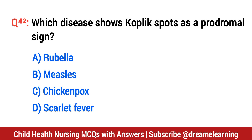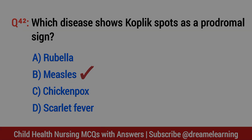Question number 42. Which disease shows Koplik spots as a prodromal sign? The right option is B: measles.